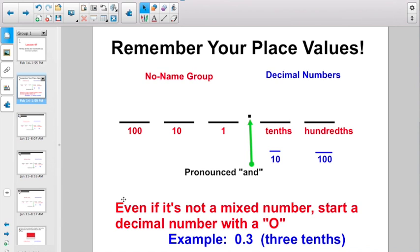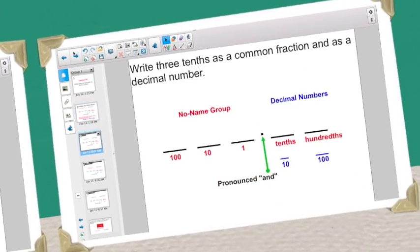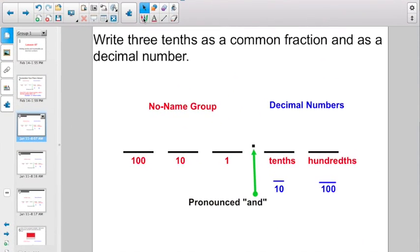So even if it's not a mixed number, you want to start a decimal number with a zero. For example, if you had 0.3, that would be the correct way to write something that's representing three tenths. Even though you just read it as three tenths, you're not going to say zero and three tenths. So let's dive right into it with some examples.